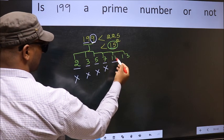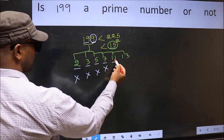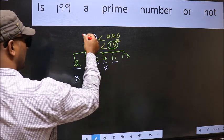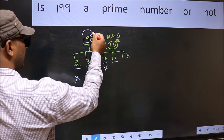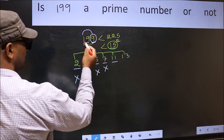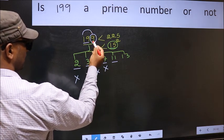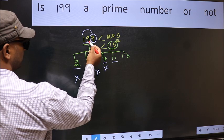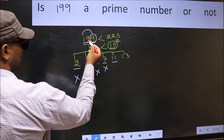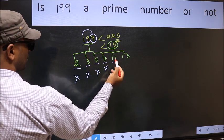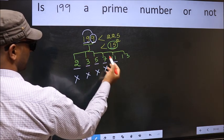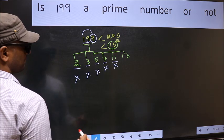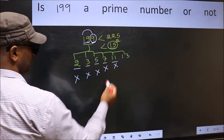Next, number 11: to check divisibility by 11, add alternate digits — 1 plus 9 plus 9 gives 19, then subtract the remaining digit: 10 minus 9 is 1. Since 1 is not divisible by 11, this number is also not divisible by 11.